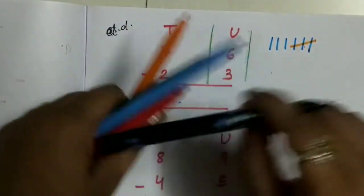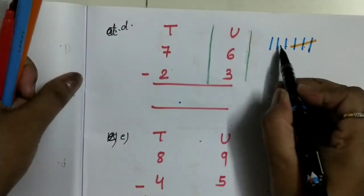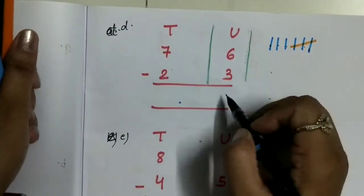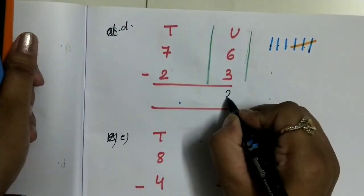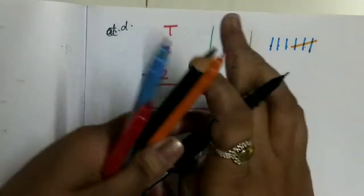How many lines are remaining? Count it: 1, 2, 3. So 6 minus 3 will be 3.